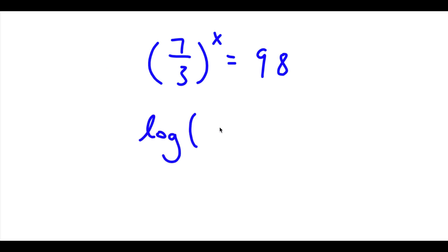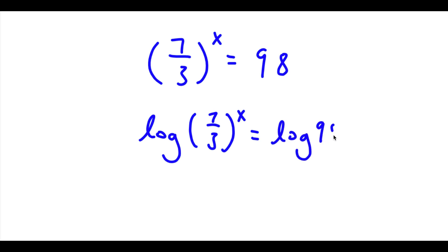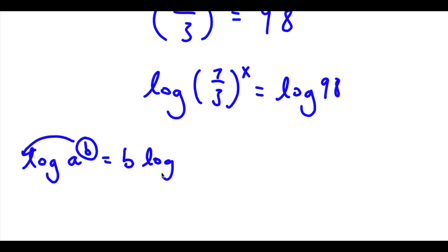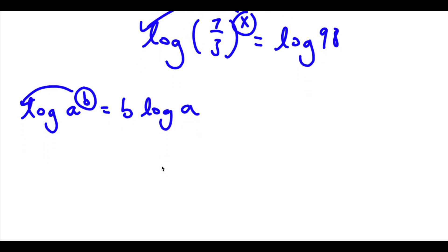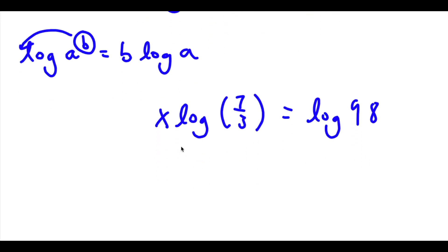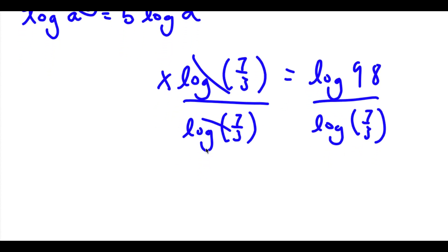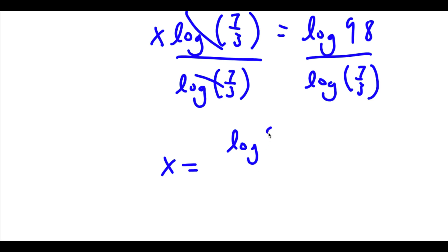Now I'm going to take the log on both sides. So I have log of 7/3 to the power of x equals log 98. Using the logarithm property that log a to the power of b equals b times log a, I can move the exponent x to the front: x times log(7/3) equals log 98. Dividing both sides by log(7/3), I'm left with x equals log 98 over log(7/3).